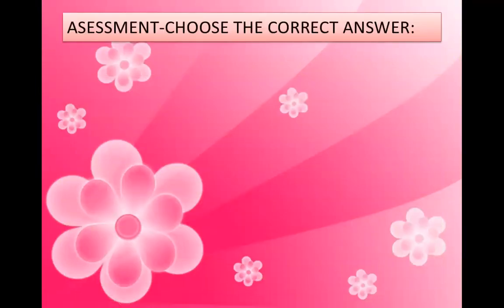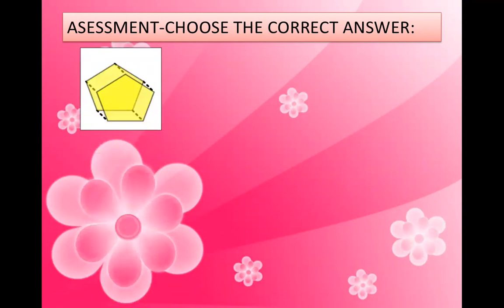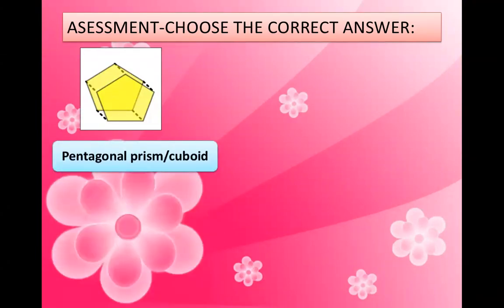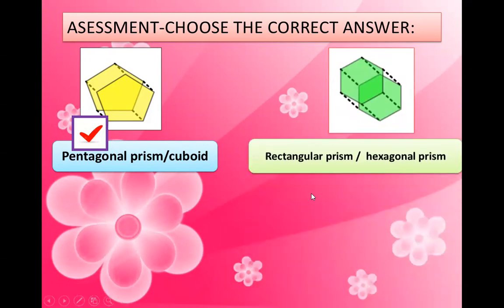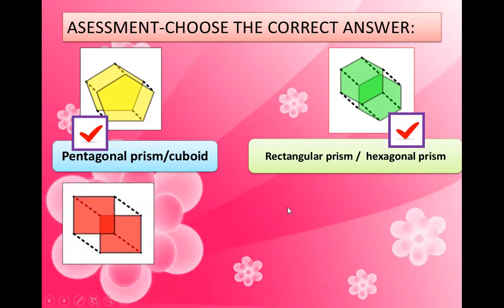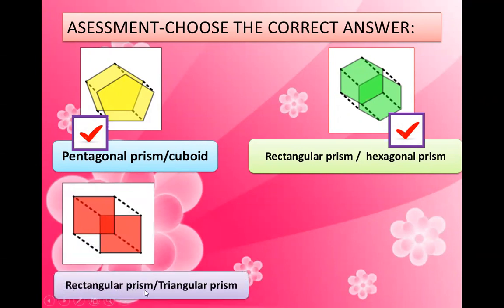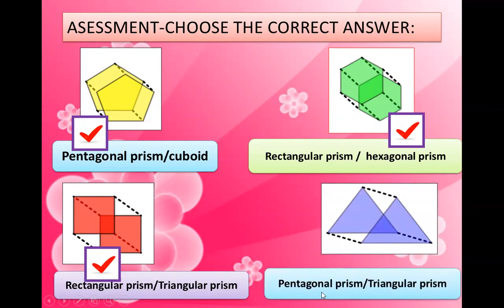Assessment. Choose the correct answer. Is this a pentagonal prism or a cuboid? Yes, it's a pentagonal prism. Is this a rectangular prism or hexagonal prism? Yes, it is a hexagonal prism. Is this a rectangular prism or a triangular prism? Correct, it's a rectangular prism. Last one — is this a pentagonal prism or a triangular prism? Yes, it is a triangular prism.